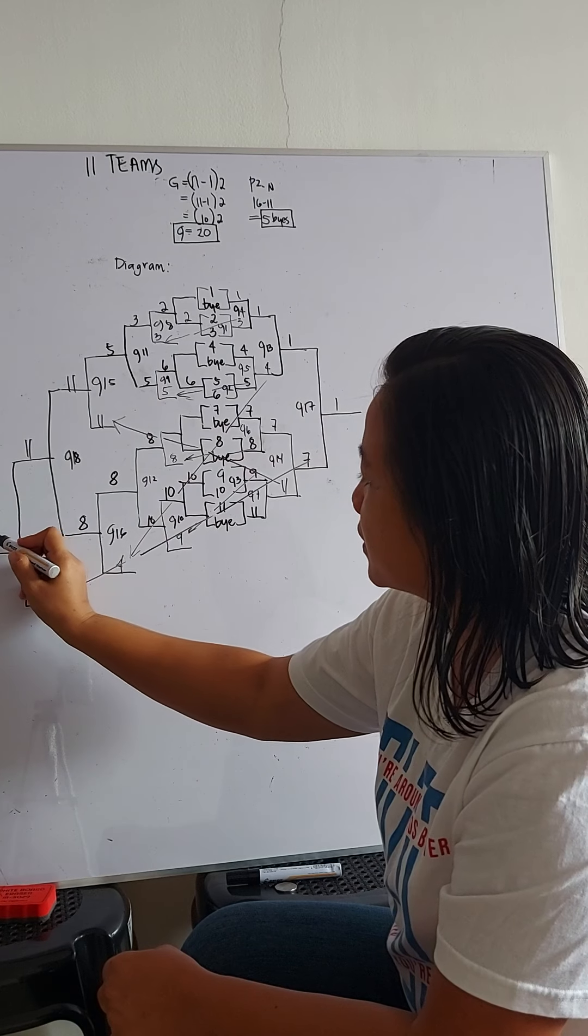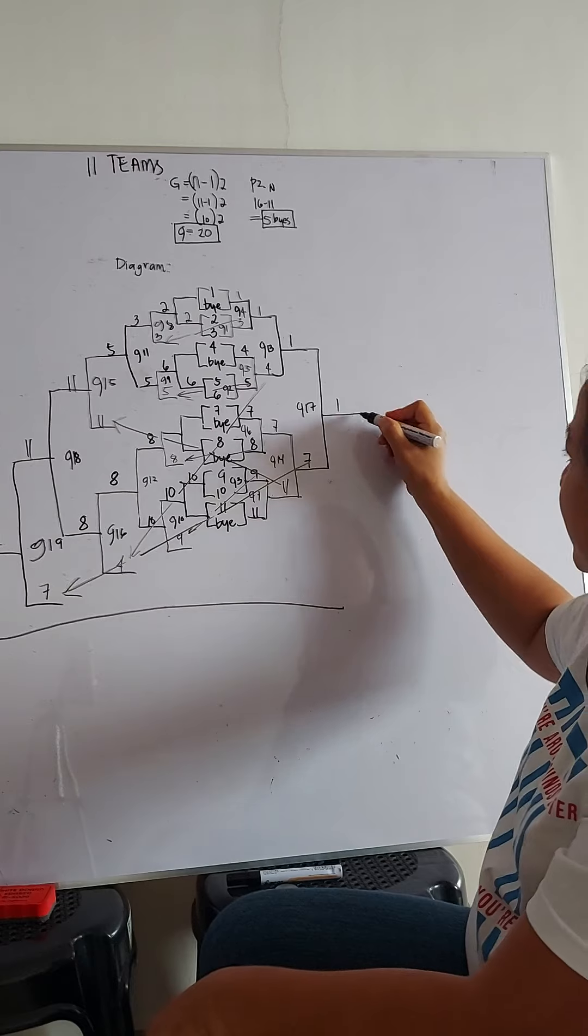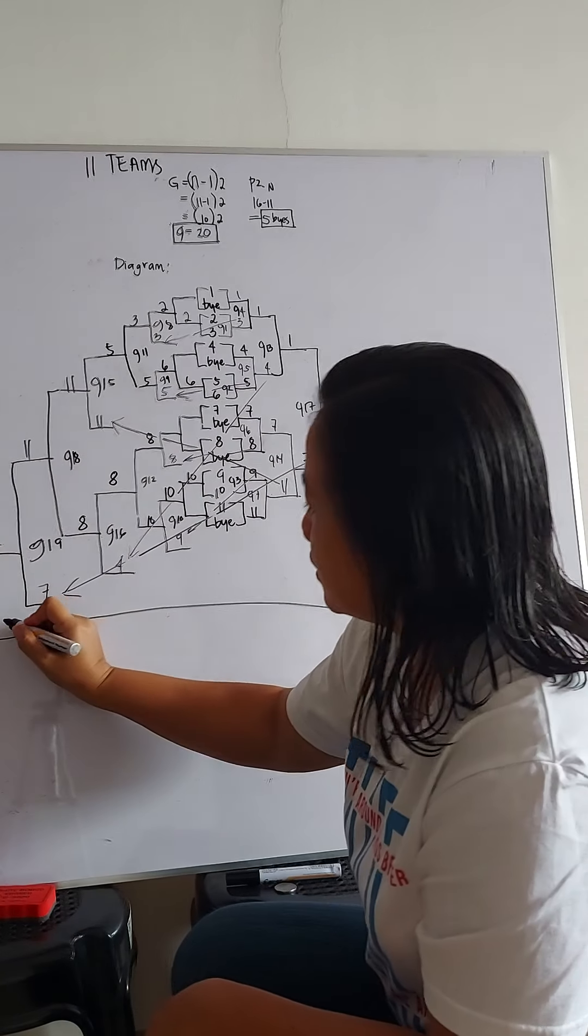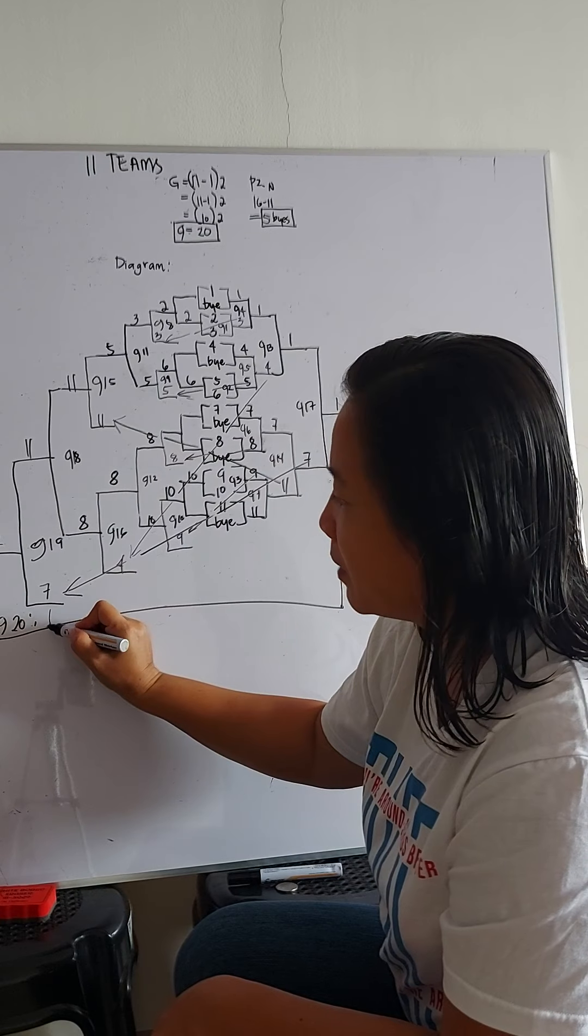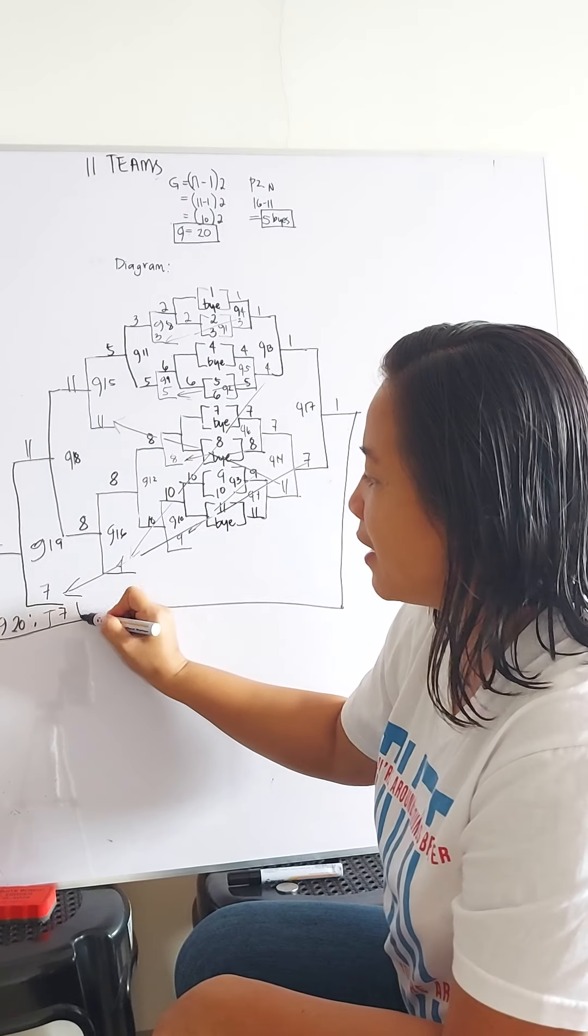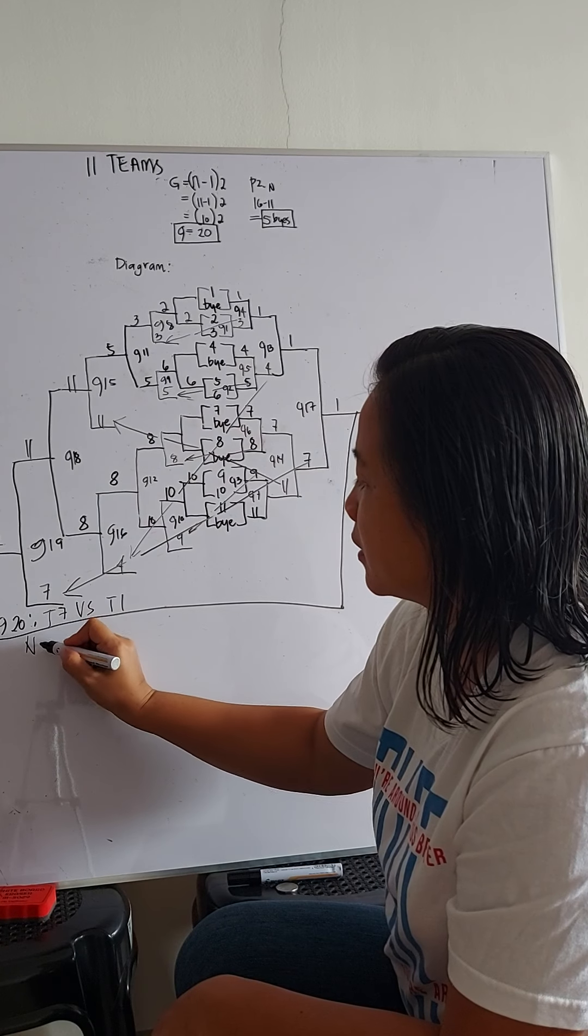Let's have 7 again. And so, let's close the bracket then. So, this is our game 20 to be played between team 7 versus team 1.